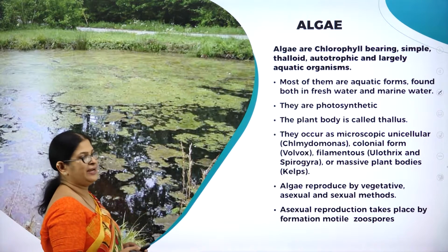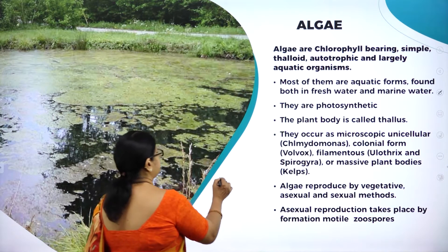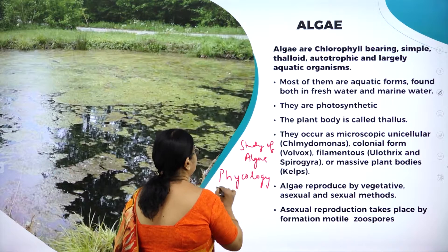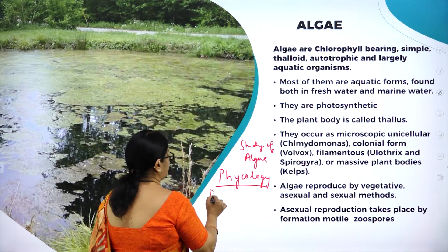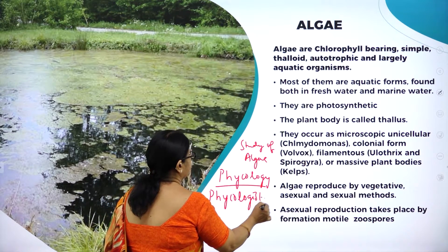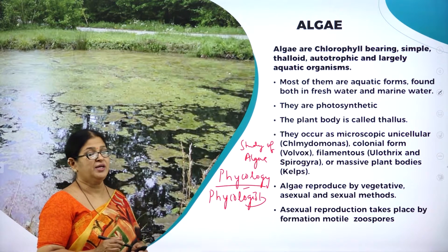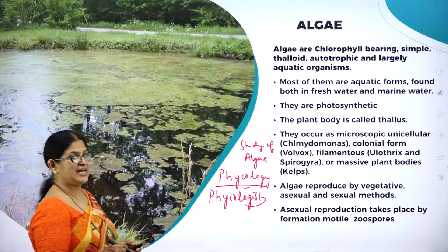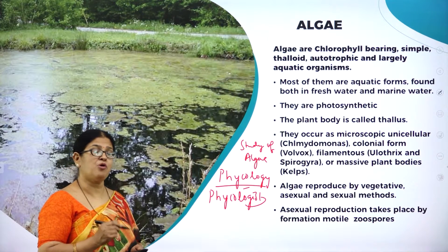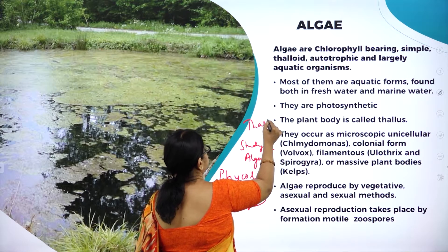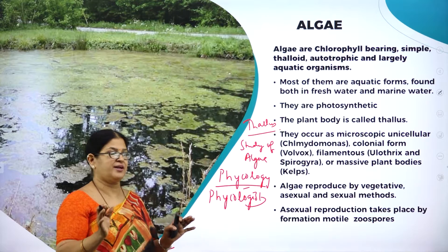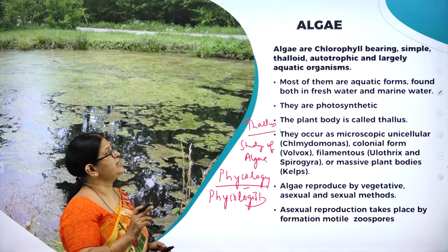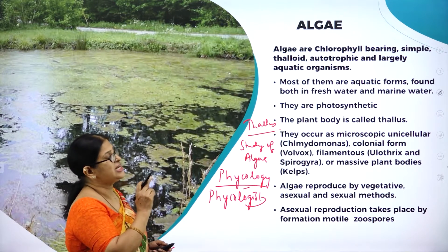Here you can see a beautiful picture of algae. The study of algae is called phycology, and the scientist who studies algae is called a phycologist. Algae have a great role to play in the plant kingdom and are also main sources of food. Algae are chlorophyll-bearing, simple, and the plant body is thallus — you cannot differentiate it into root, stem, leaf, etc. Algae are chlorophyll-bearing, simple, thalloid, autotrophic, and largely aquatic organisms.